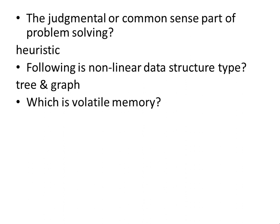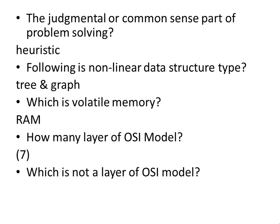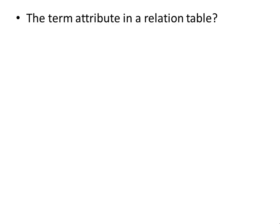Which is volatile memory? RAM — RAM is volatile memory. How many layers does the OSI model have? There are 7 layers. The term attribute in a relational table refers to a Column.